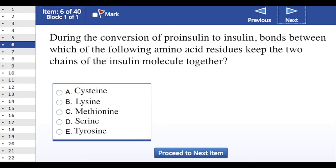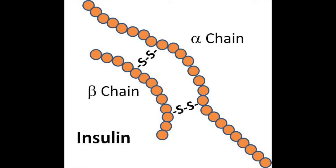The correct answer is cysteine. It is the cysteine residues which actually hold the two chains together. The A and B chains in the mature insulin molecule are held together by disulfide bridges, and these disulfide bridges are anchored onto the chains by cysteine residues.